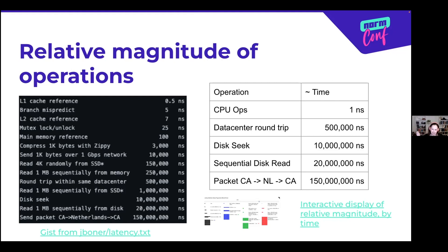A data round trip versus a packet from California to the Netherlands and back is quite different. Reading data is also slow, but a sequential read of approximately a megabyte is only twice the length of time as actually going to find data on a disk. CPU operations — things close to the CPU and RAM, like an L1 cache reference or a branch mispredict — are fast. So when we think about data, we want to move it around as little as possible because it's incredibly slow. The relative magnitude is what matters, even if the 2012 numbers are old.